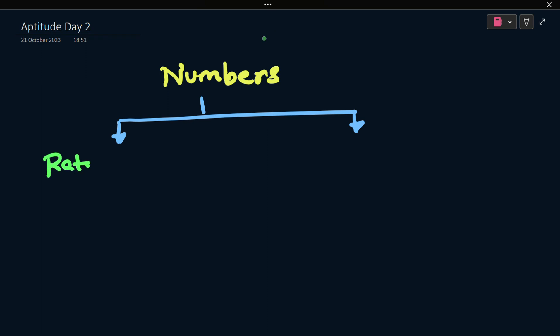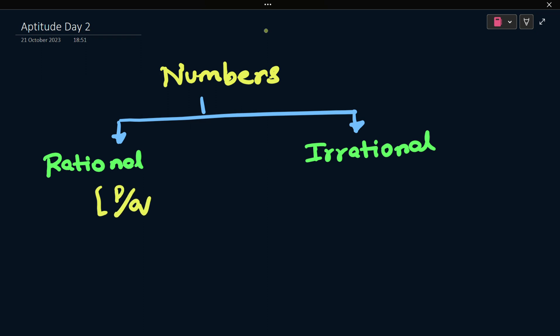One is rational numbers and one is irrational numbers. Rational numbers are the numbers which are in the form of P by Q, where Q is not equal to 0. Q can be anything, so Q value can be equal to 100, but Q cannot be equal to 0.